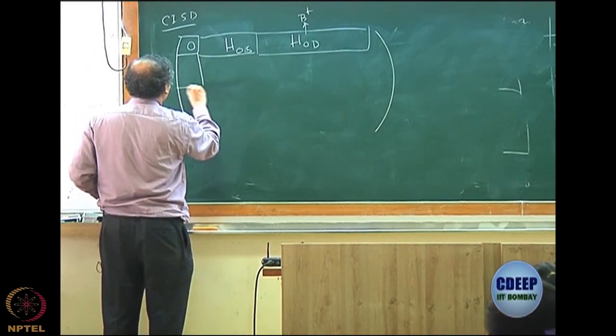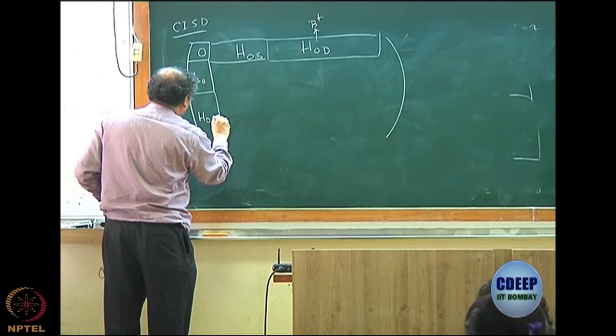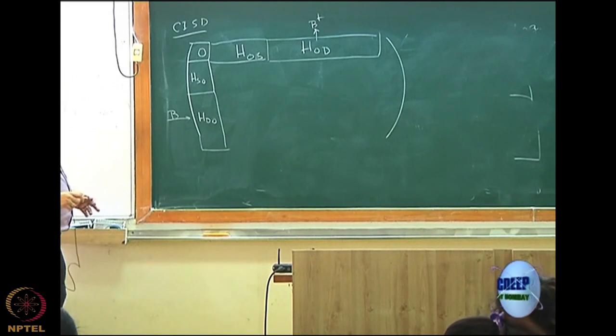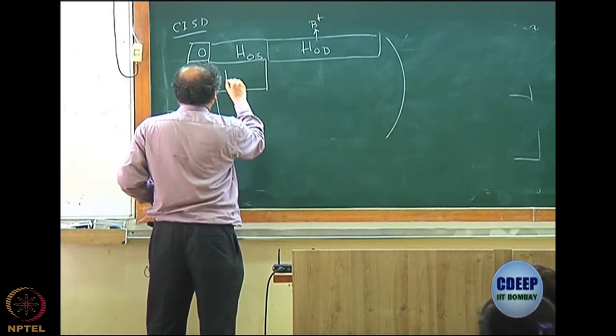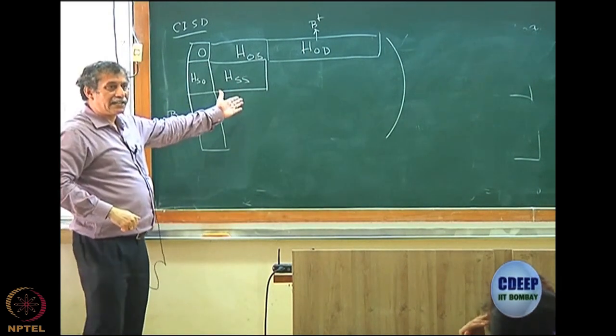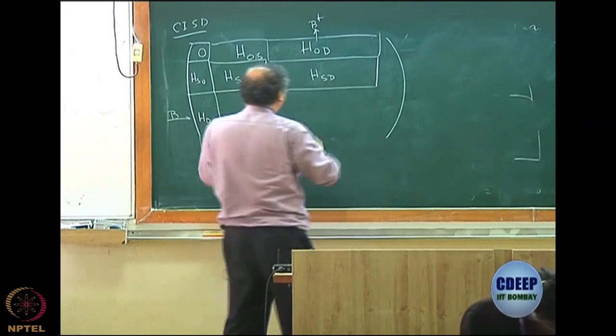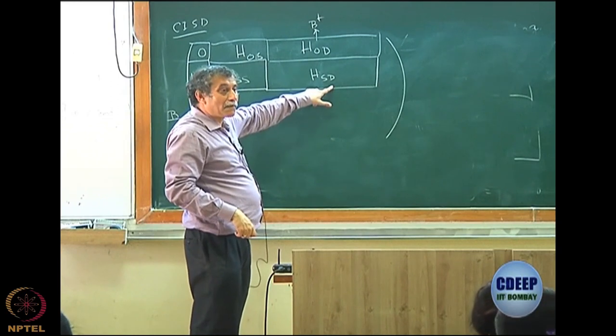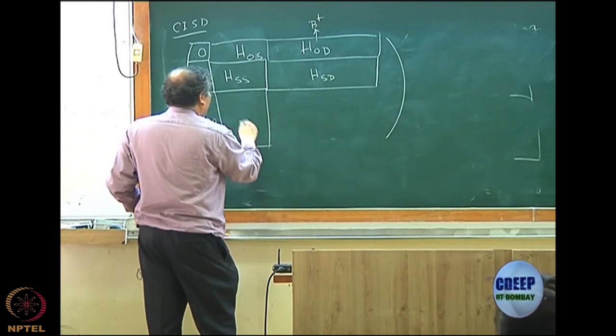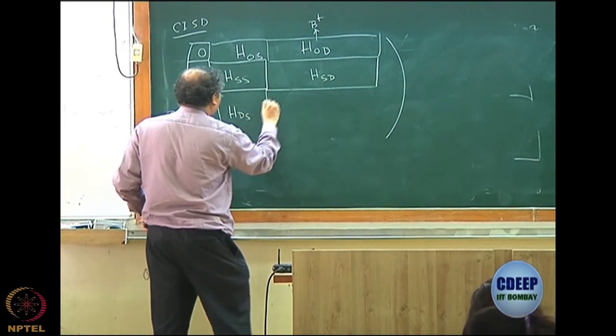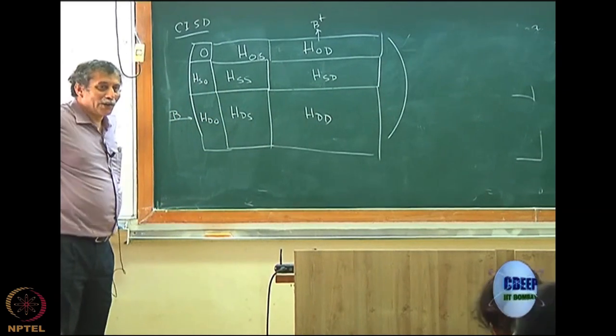Then you have another block which is exactly opposite HS0, then another block column block which will be HD0, this is what I called B. This is the new block that is coming in, it is a block matrix. What would be this block? This block would be HSS between one set of singly excited to another set of singly excited. And this block will be HSD. These are all matrices. This is a rectangular matrix because number of singles is different from number of doubles. This is a square matrix. And then you have similarly the reverse of this which is HDS and eventually another square matrix which is HDD.